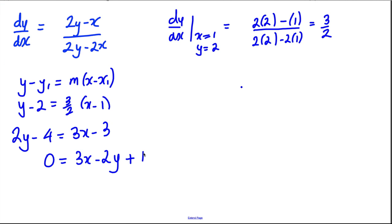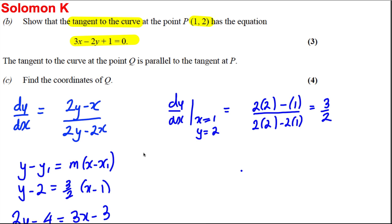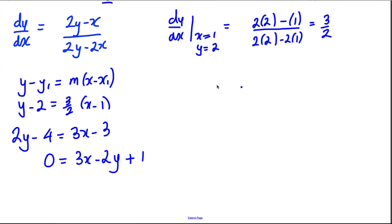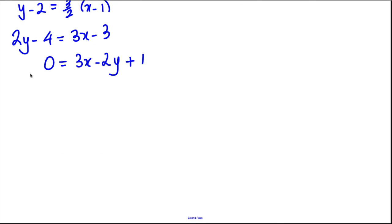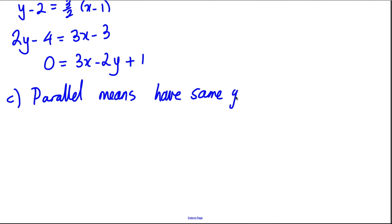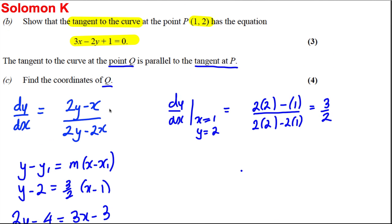The tangent to the curve at a different point Q is parallel to the tangent at P — find the coordinates of Q. Parallel means the same gradient. So for part c, we're going to solve the equation when dy/dx is equal to 3 over 2.